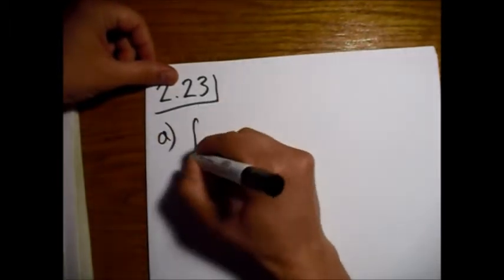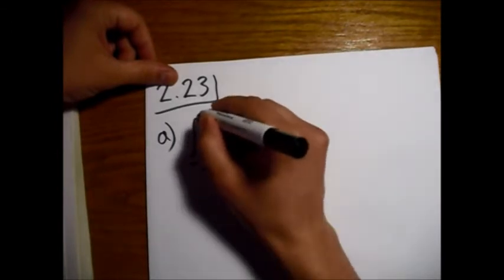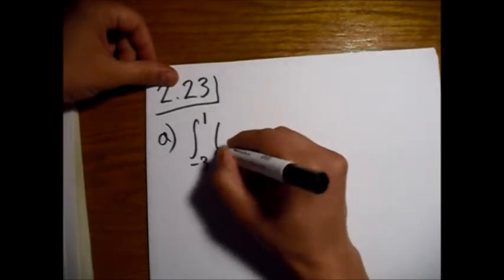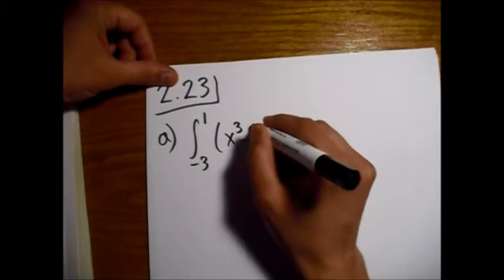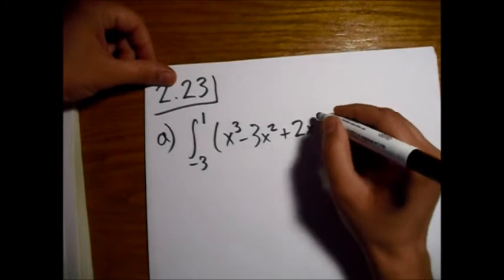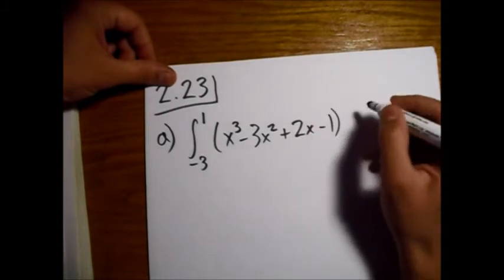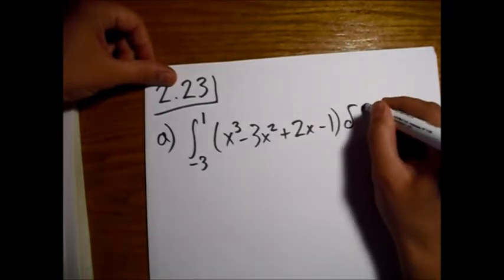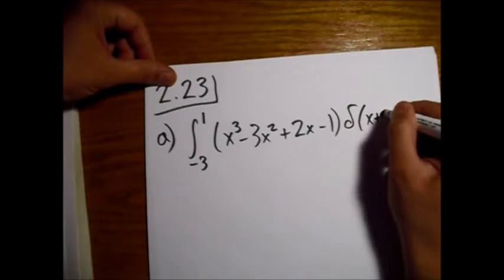So this one is evaluated from minus 3 to 1, and it's x cubed minus 3x squared plus 2x minus 1 times the Dirac delta function of x plus 2, dx.